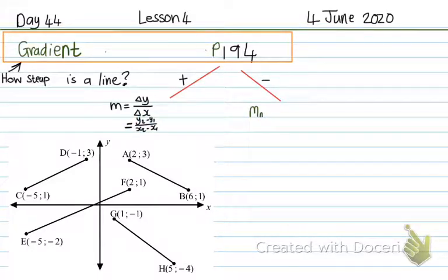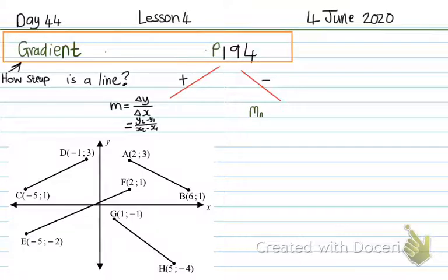So if I have two coordinates, I just subtract the y values on top and the x values on the bottom and that will give me the gradient. Let's do a few examples. Let's say I have these lines on a Cartesian plane and now I'm going to work out the gradient of AB.